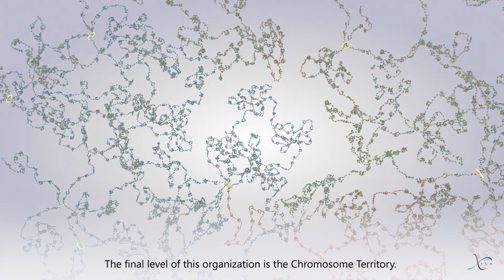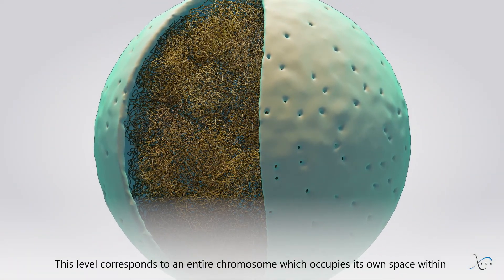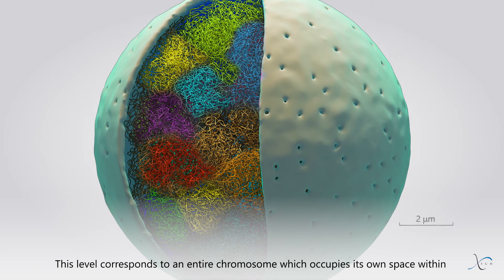The final level of this organization is the chromosome territory. This level corresponds to an entire chromosome, which occupies its own space within the nucleus, with reduced intermingling with the other chromosomes.